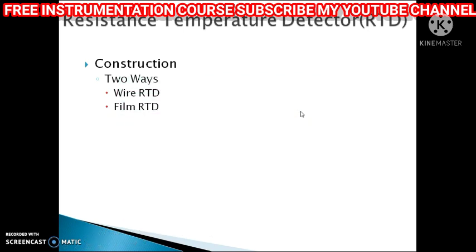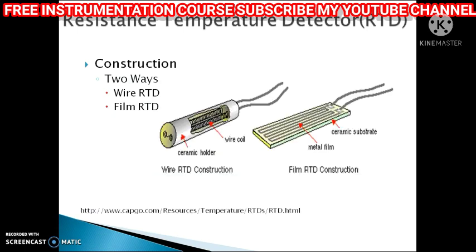Next is the film RTD. These film RTDs consist of thin metal film that is silk-screened on a ceramic substrate. These sensors are less accurate but are inexpensive and available in smaller sizes.